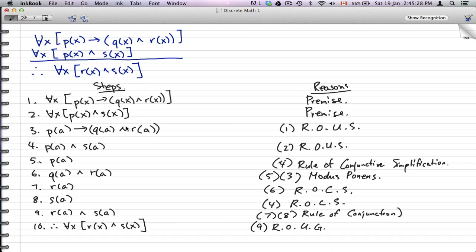And that's all the reasons for all these steps of going from this statement and that statement to finding out that last statement that we're looking for: therefore for all x is r(x) and s(x).